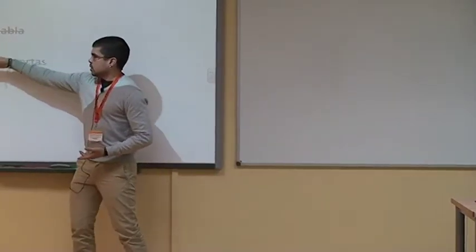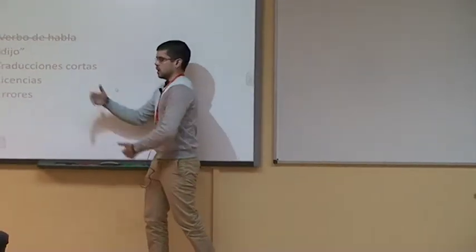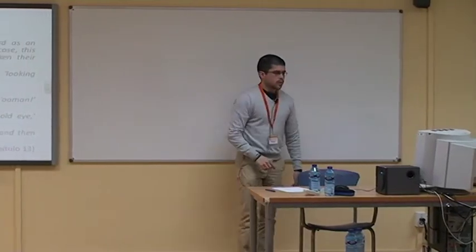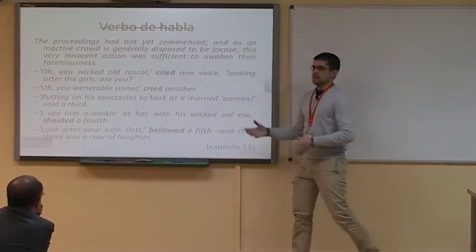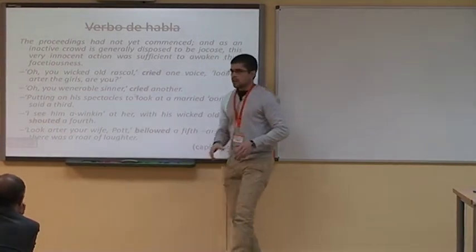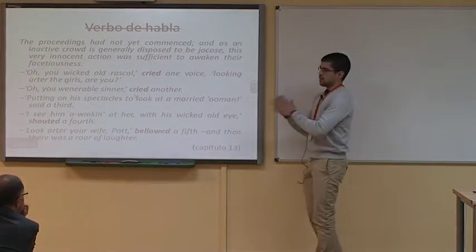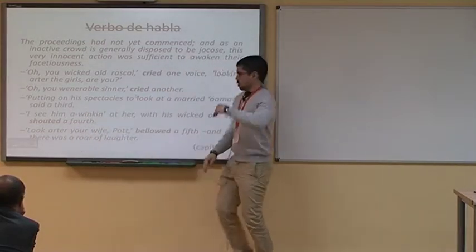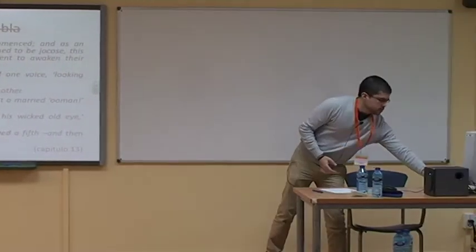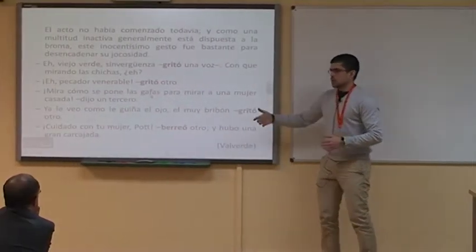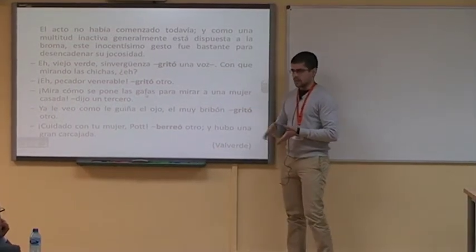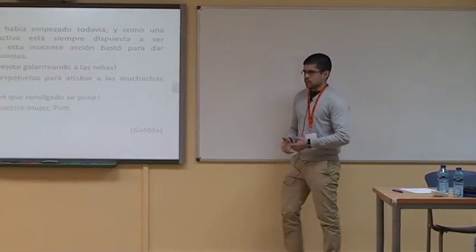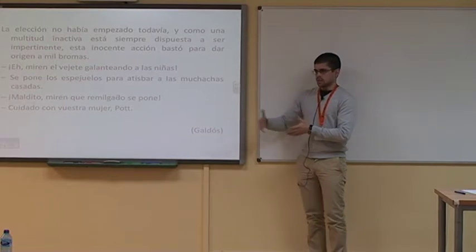He escogido una muestra de ejemplos basada en cinco bloques atendiendo a patrones que se observan de forma sistemática en la traducción de Galdós: cuando no utiliza verbo de habla, la utilización repetida de dijo, traducciones que se quedan cortas, otras en las que se excede aunque en la original no aparece un verbo tan específico, y errores de traducción. En el primer ejemplo, los Pickwickianos han ido a un pueblo en plenas elecciones y la muchedumbre empieza a increparles; la tensión va aumentando paulatinamente y eso se refleja en el uso de los verbos de habla: cry, cry, un punto más, shouted, otro punto más, bawl out. Valverde utiliza gritó, gritó, gritó y berreó, conservando esa línea ascendente en la vehemencia de los actos de habla. Pero Galdós no utiliza ningún verbo de habla, y eso lo hace en 727 ocasiones.